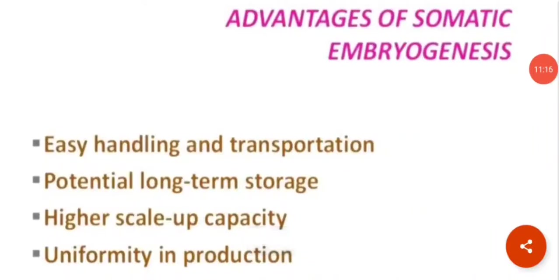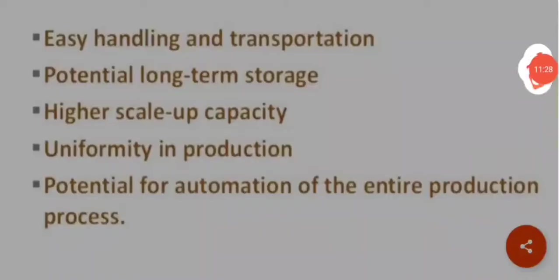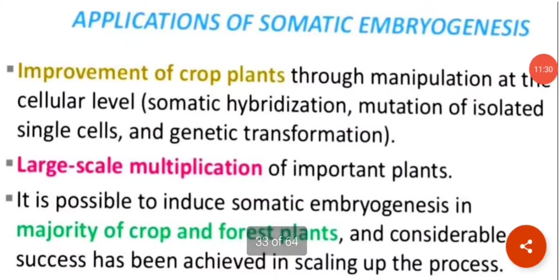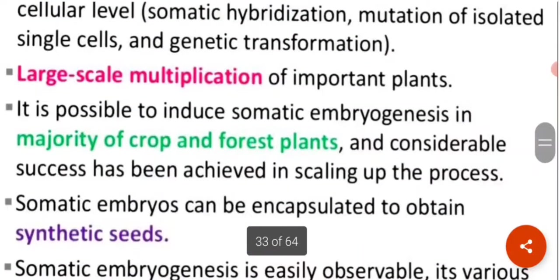What are the advantages? Easy handling and transportation, potential long-term storage, higher scale-up capacity, uniformity in production, and potential for automation of the entire production process. What are the applications of somatic embryogenesis? Improvement of crop plants through manipulation at the cellular level, and large-scale multiplication of important plants. It is possible to induce somatic embryogenesis in the majority of crop and forest plants, and considerable success has been achieved in scaling up the process.